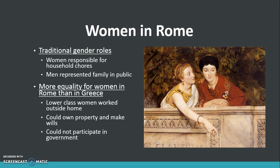Women in Rome followed traditional gender roles. Women were responsible for household chores and taking care of the children, and men represented the family in the public setting. There was more equality for women in Rome than in Greece. Lower class women were allowed to work outside of their home. They could own property and make wills, but they could not participate in government.